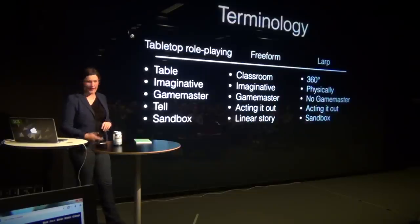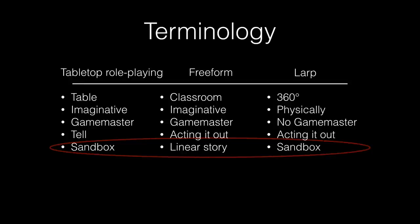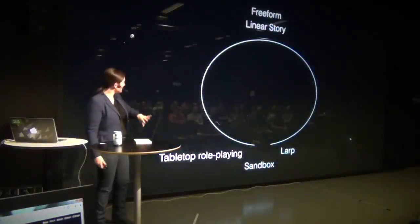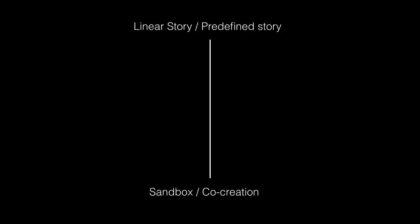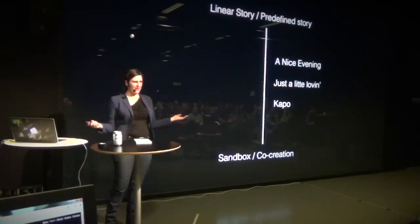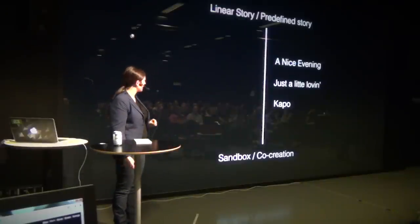So back to this terminology. I look at this line and, as the engineer I am, I take the line and make a circle. We have the linear story and predefined story on one end, and sandbox co-creation on the other. A LARP like 'A Nice Evening' has a very linear story — read the play, watch the movie, you know how the LARP ends. While a game like Kapo is much more co-creation. And 'Just a Little Lovin'' is somewhere in the middle.